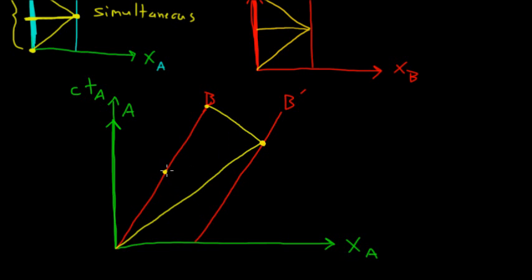But we notice that that is going to be slightly tilted upwards. Person A and A prime would say that this is simultaneous. But person B and B prime are going to say that this is simultaneous.